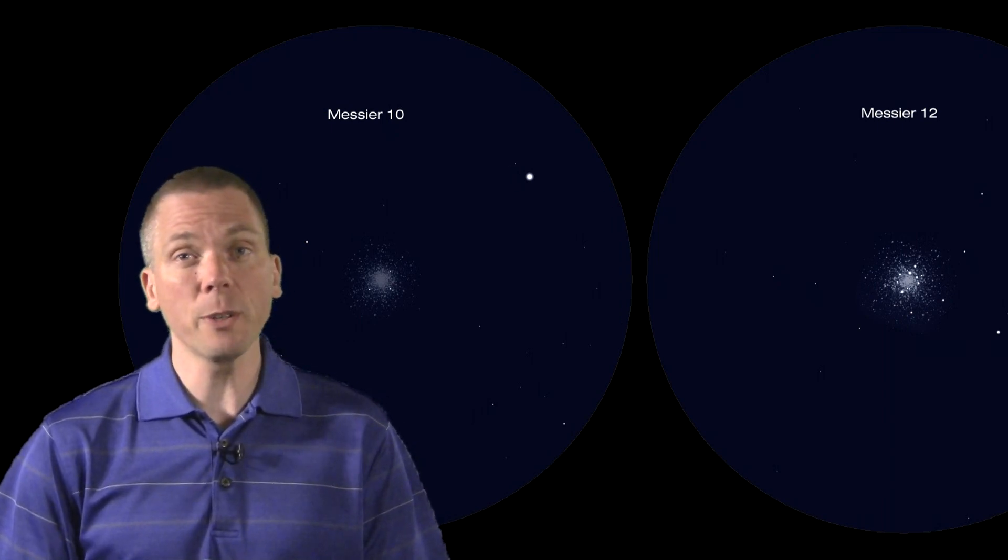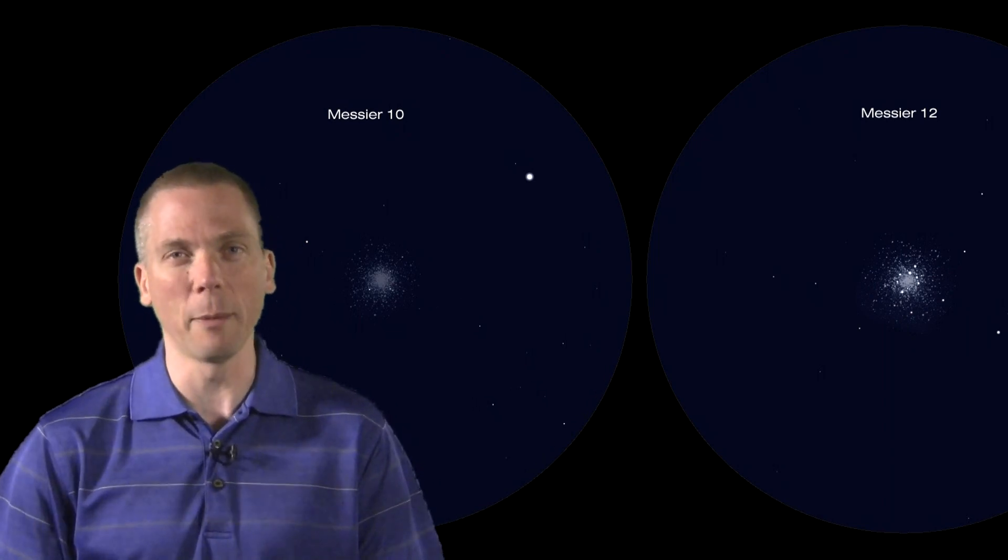Messier 12 is slightly larger, but also looks a bit dimmer, and is not as perfectly spherical as M10 is. What differences do you see between these two globular clusters?